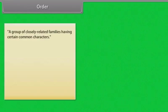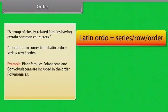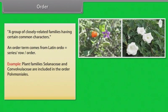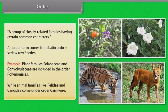Order is a group of closely related families having certain common characters. The term order comes from Latin ordo, meaning series or row. For example, plant families Solanaceae and Convolvulaceae are included in the order Polemoniales, while animal families like Felidae and Canidae come under order Carnivora.